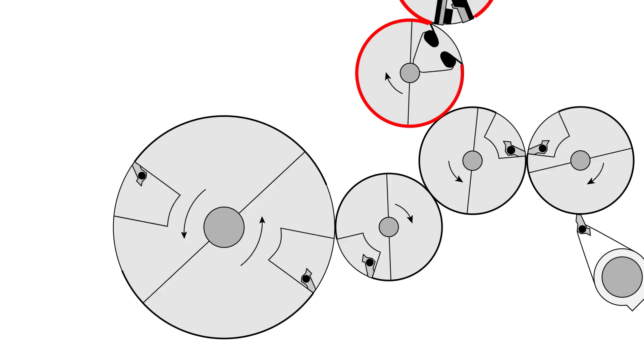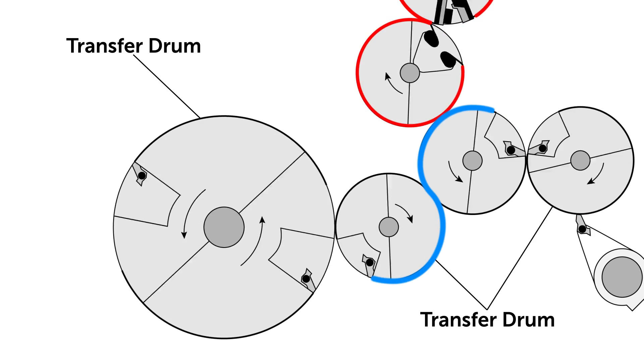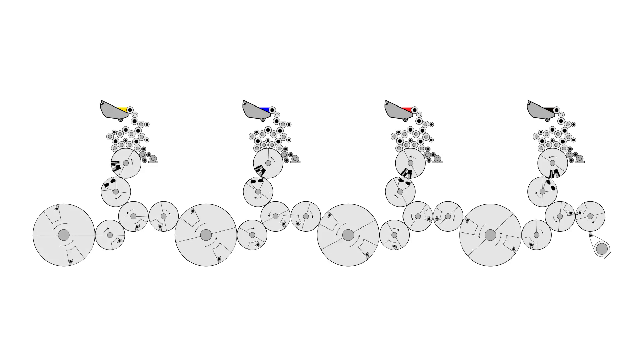The paper will then run through the transfer drums. Each cylinder is equipped with grippers that pick up the paper from the previous cylinder and transfer it to the next.